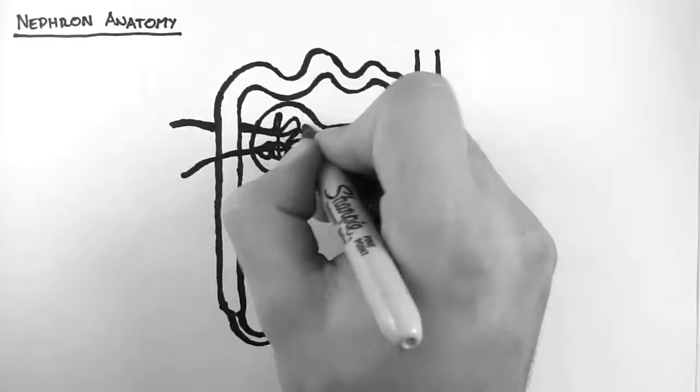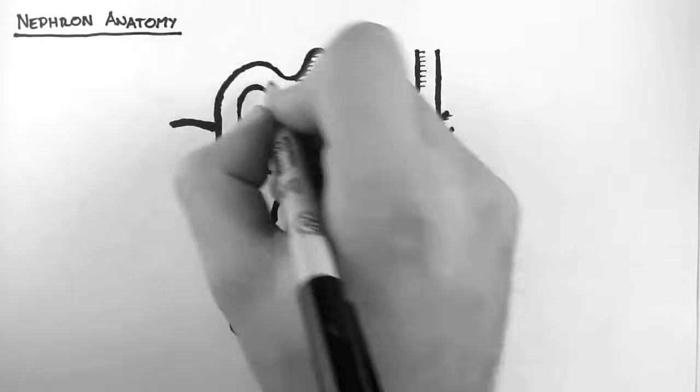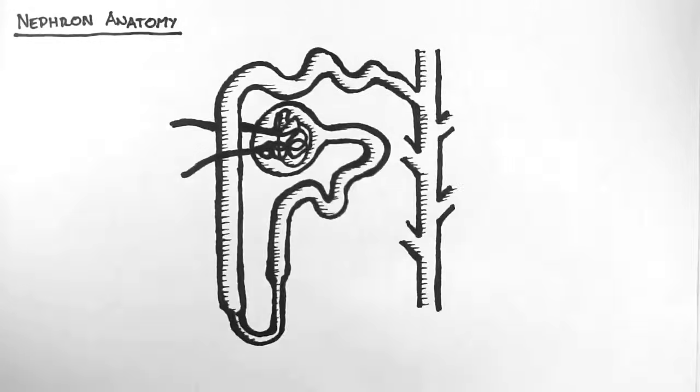You may hear of two varieties of nephron: cortical nephrons and juxtamedullary nephrons. The structure is very similar, with the main difference being how superficially the glomerulus sits in the cortex and how deep the loop of Henle dips into the medulla.